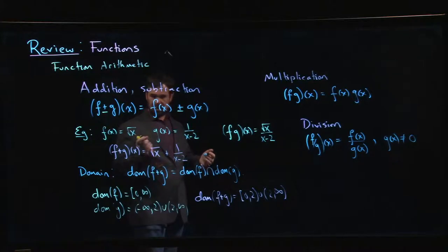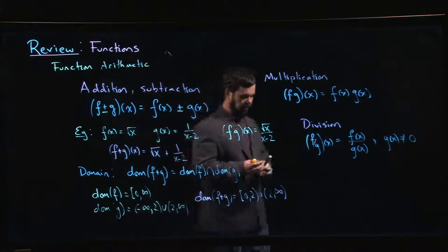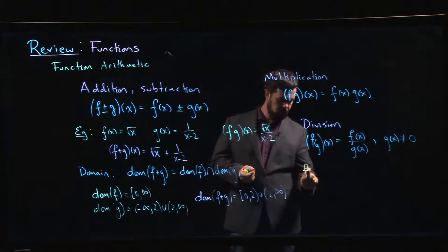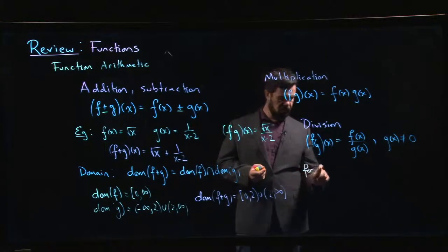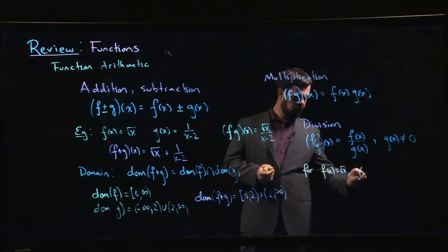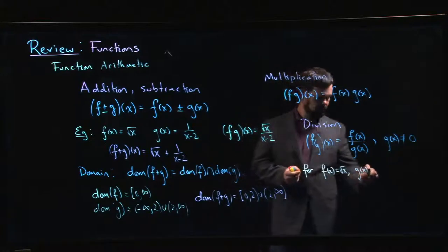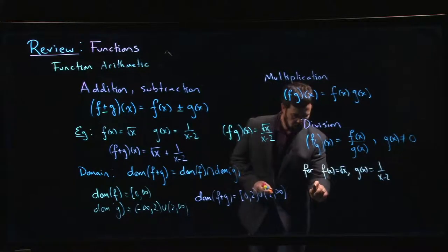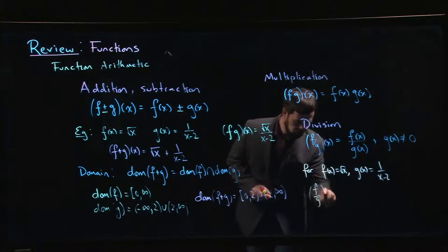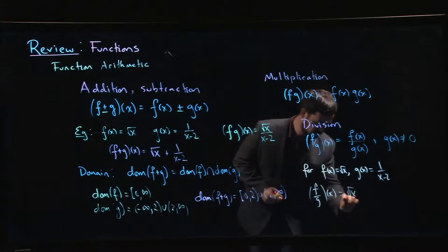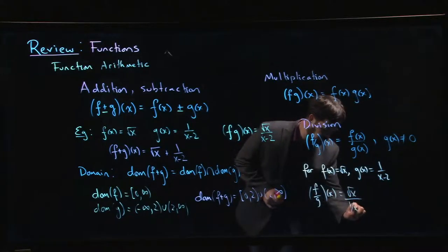Curiously enough, this is an interesting one. If I use our example here, and this is probably a good thing to mention—in the case where f of x is root x and g of x is 1 over x minus 2, so if you do f over g at x, that's root x divided by 1 over x minus 2.